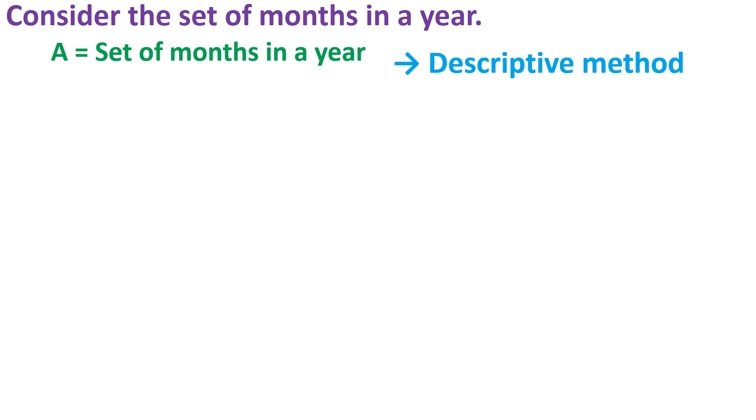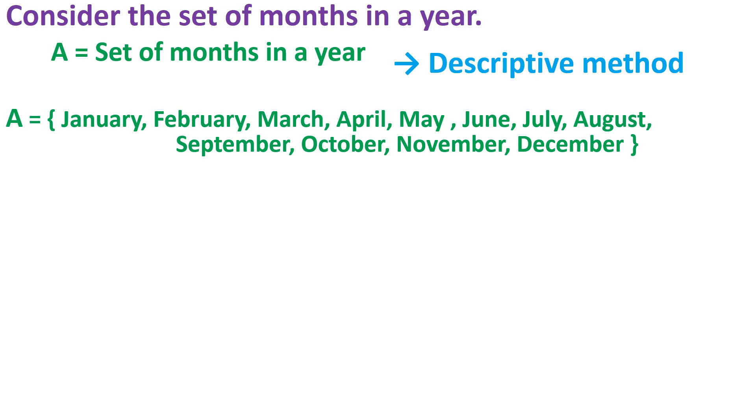Another method is to list all the elements of the set within braces and separate each element by using a comma. Like in front of you, I have listed all elements of the set of months in a year in braces, and each one is separated using a comma. This method of writing all the elements of the set is called tabular or roster method.